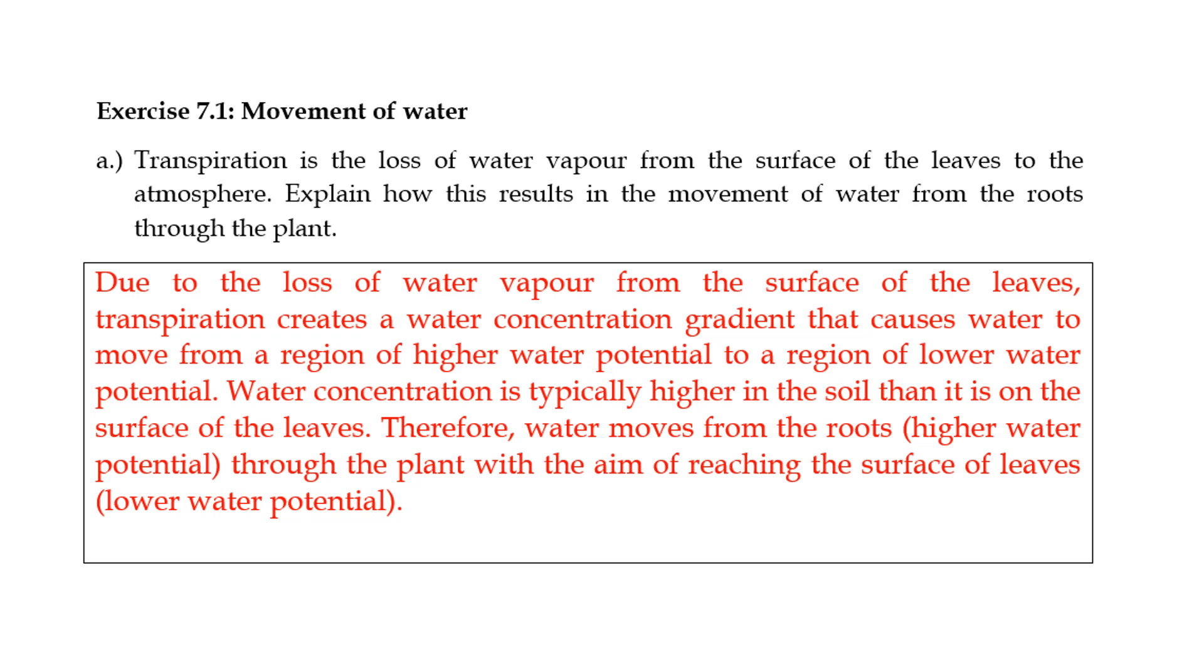So first things first, the movement of water. There's a question in the workbook about how transpiration is the loss of water from the surface of the leaves and you should explain how this results in the movement of water from the roots through the plant. This is an important question that you're likely to get in your CIE exams and usually it's a question that's based on osmosis.